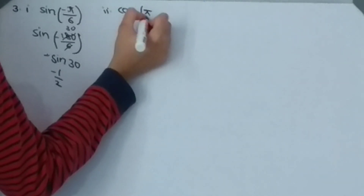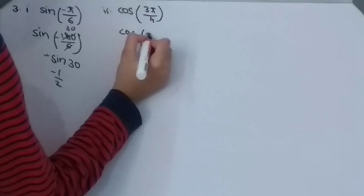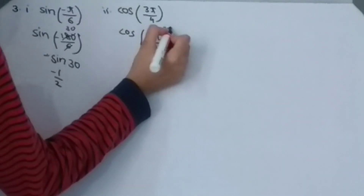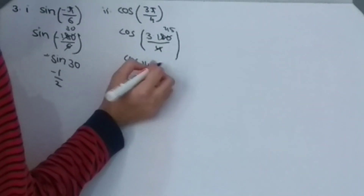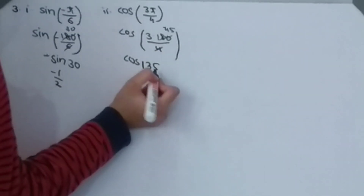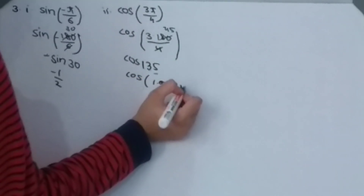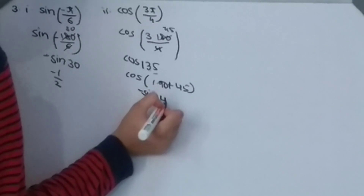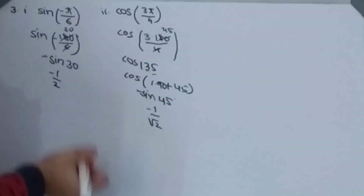Second: cos(3π/4). So cos(3×180°/4) after simplification gives 135°, then splitting cos(1×90° + 45°), it becomes minus sin(45°), which is minus 1/√2.